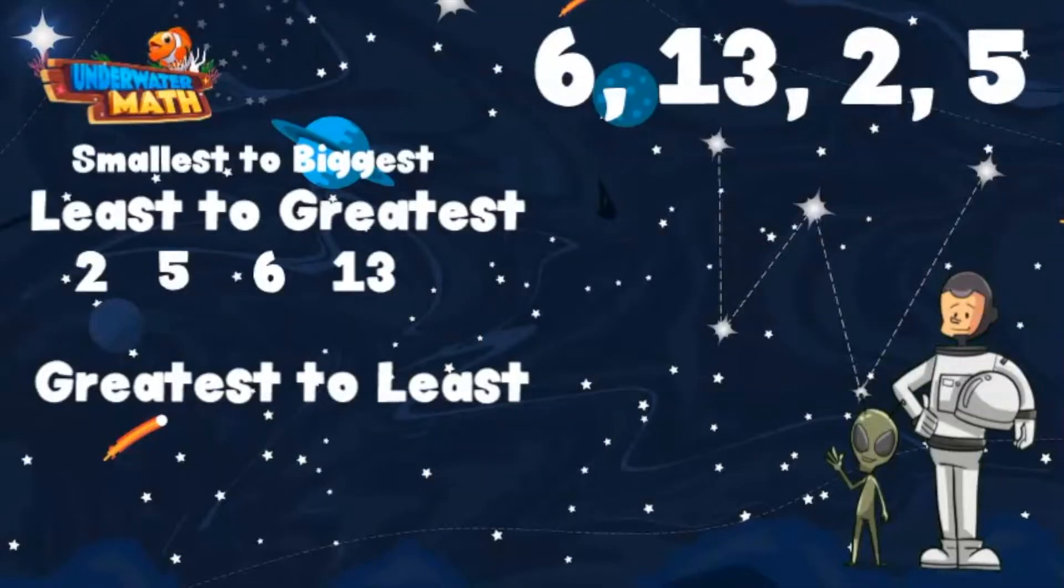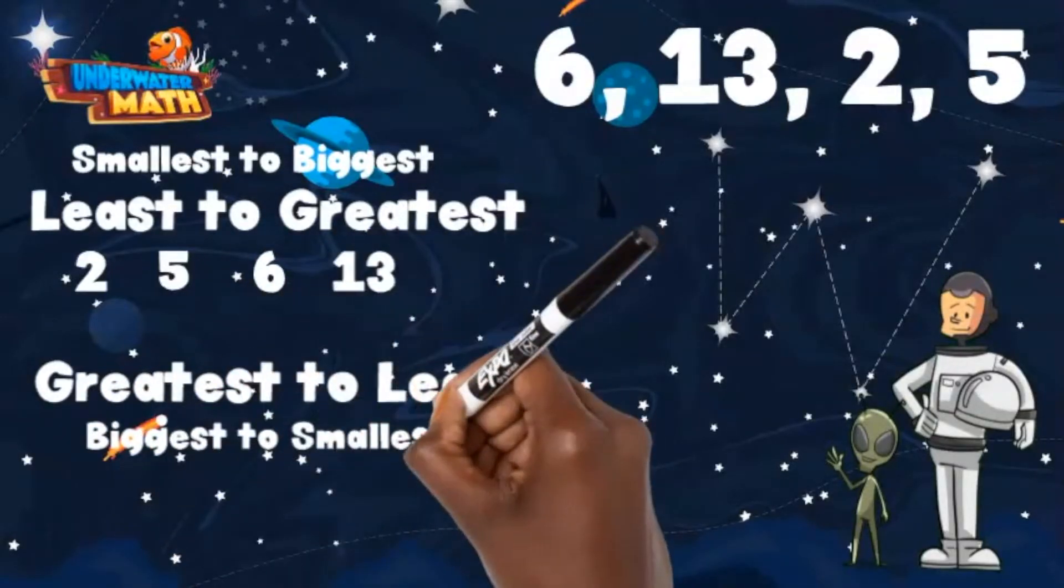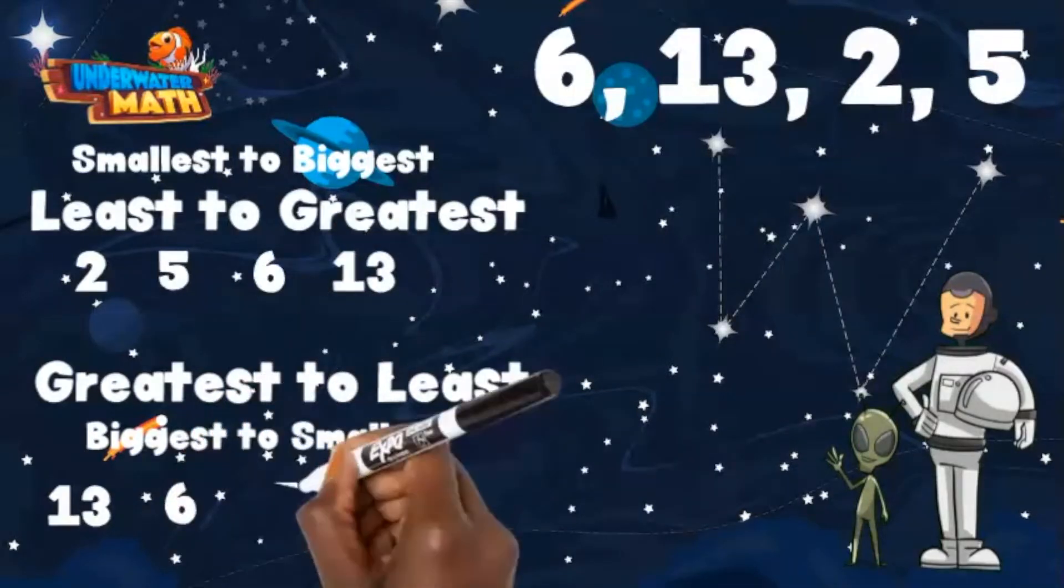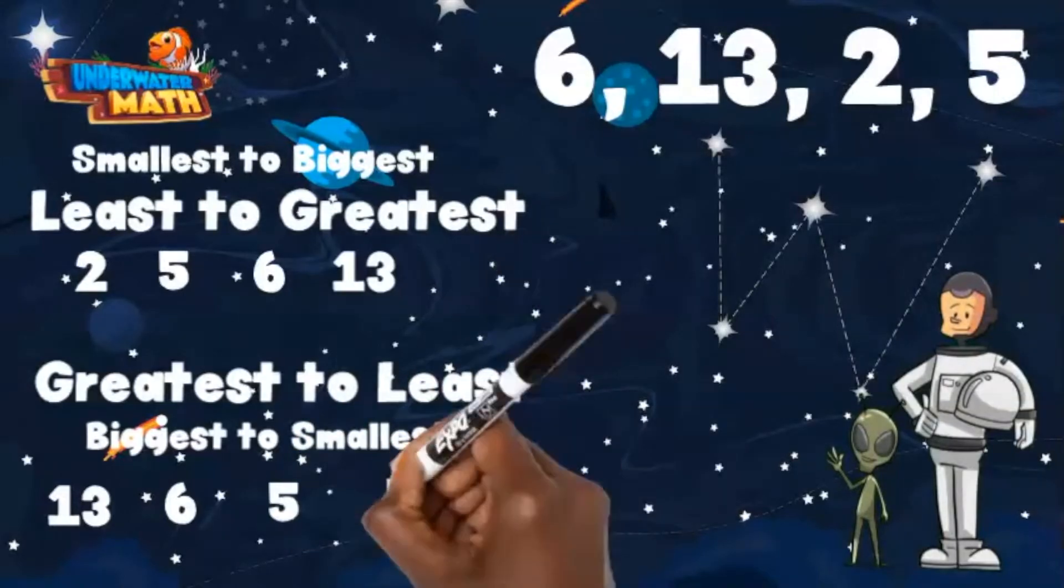If we needed to put them in order from greatest to least, we would follow that same process but start with the biggest number 13. The next largest number is 6, then 5, and finally end with the smallest number 2.